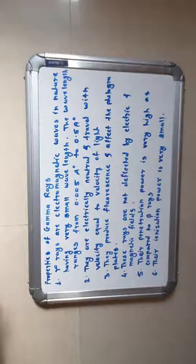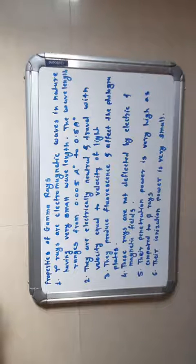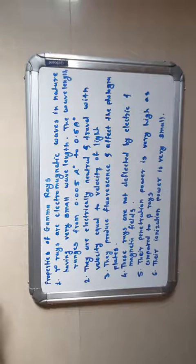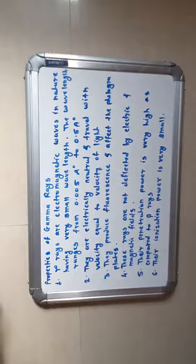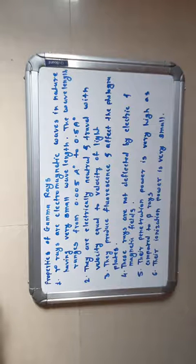These are the properties of alpha rays, beta rays, and gamma rays. In today's lecture, we discussed the experiment related to radioactivity — specifically the effect of magnetic field and electric field on alpha, beta, and gamma rays when the radioactive substance is placed in a lead block.